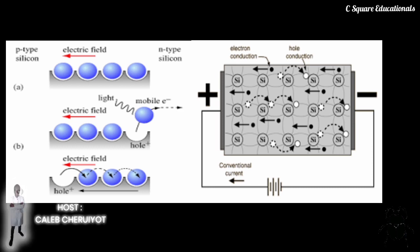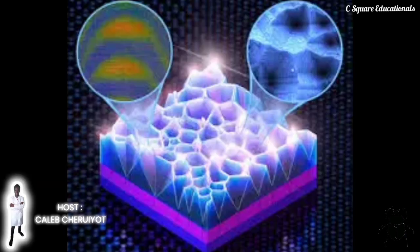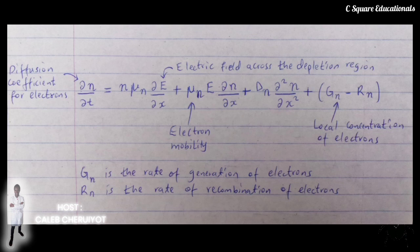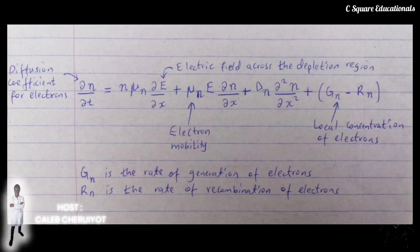The equation for electrons in one dimension is as shown. Here, n is the local concentration of electrons, mu-n is the electron mobility, E is the electric field across the depletion region, D-n is the diffusion coefficient for electrons, G-n is the rate of generation of electrons, and R-n is the rate of recombination of electrons.